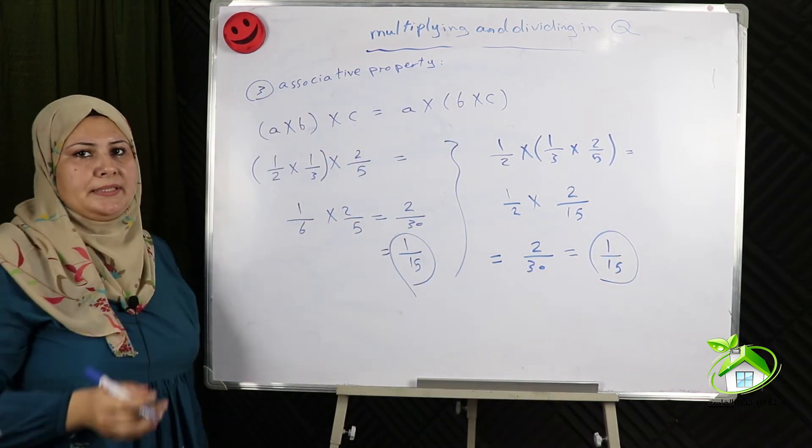Multiplying by 0: any number times 0 equals 0. We can say that 0 is a strong number in the multiplication operation. The multiplicative inverse of 1 is itself. The multiplicative inverse of negative 1 is itself, which is negative 1.